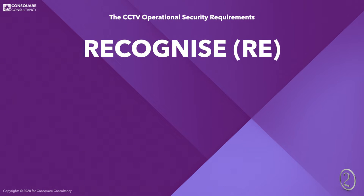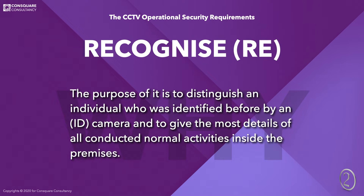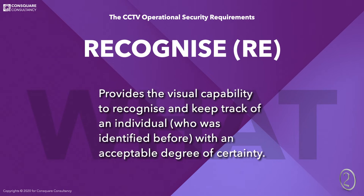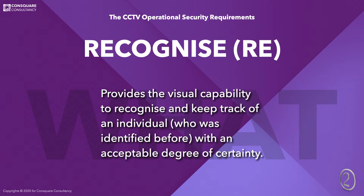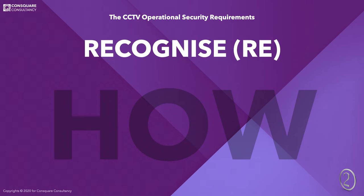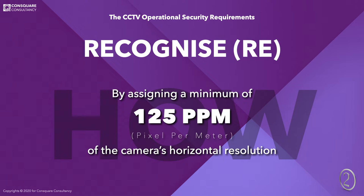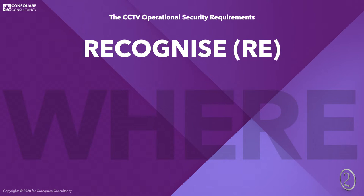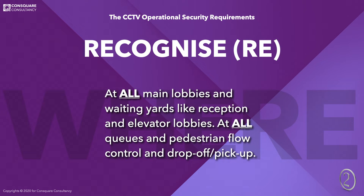The second requirement is to Recognize, or RE. The purpose is to distinguish an individual who was identified before by an identification camera, and to give the most details of all conducted normal activities inside the premises. It provides the visual capability to recognize and keep track of an identified individual with an acceptable degree of certainty. This requires a minimum of 125 ppm of the camera's horizontal resolution. Recognition cameras are installed at main lobbies, waiting yards, reception areas, elevator lobbies, queues, pedestrian flow areas, and drop-off or pick-up zones.